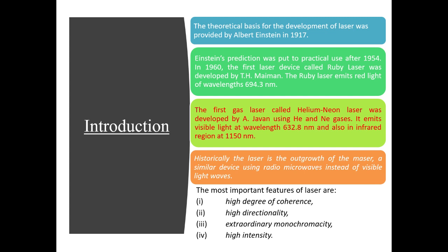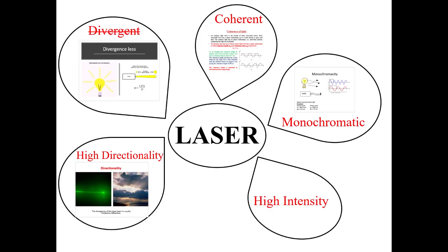The most important features of laser are the high degree of coherence, high directionality, extraordinary monochromaticity, and very high intensity. These are the key properties of laser: very high intensity, high directionality, coherence, and monochromaticity.